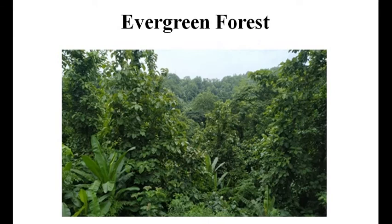With abundant rainfall, evergreen forest type extends in a more or less continuous belt from the Northeast corner of Arunachal to the Darrang district along the foothills of Himalayas. Such forests are occurring in the Nagaon district, Cachar district and greater part of the Khasi hills. These forests are composed of a very large number of species and are represented by species such as Artocarpus, Dipterocarpus, Michelia, Terminalia, Calophyllum, etc.